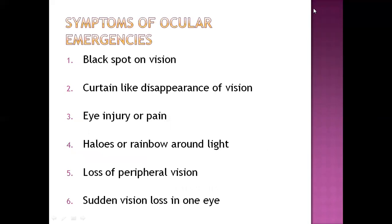Symptoms of ocular emergencies include: black spot on vision, curtain-like disappearance of vision, eye interior pain, and halos or rainbow around lights. Black spots may be due to trauma to the retina. Curtain-like disappearance occurs when there is disturbance in the neurological nerve transmission. Eye interior pain is a result of trauma. Halos or rainbow around lights occur when there is disturbance in intraocular pressure. Loss of peripheral vision and sudden vision loss in one eye occur when there is complete stoppage of nerve transmission.